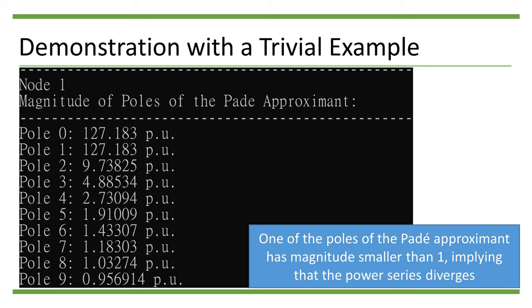Indeed, if we increase the number of terms of the power series to 100, we can start seeing the result of the direct summation diverges.